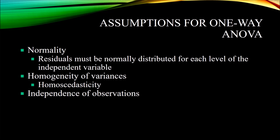The next assumption is homogeneity of variances, also known as homoscedasticity. The variances on the dependent variable need to be the same for all levels of the independent variable. Oftentimes with an ANOVA, we test this assumption using Levene's test. If you have a probability value less than 0.05, you reject the null hypothesis and conclude you have violated the assumption. A p-value greater than 0.05 means you fail to reject the null and have met the assumption of homogeneity of variances.